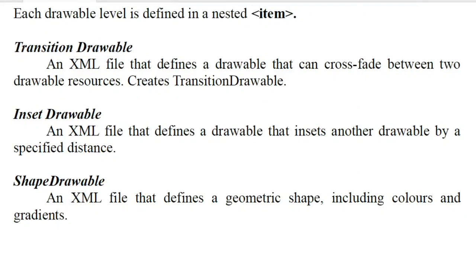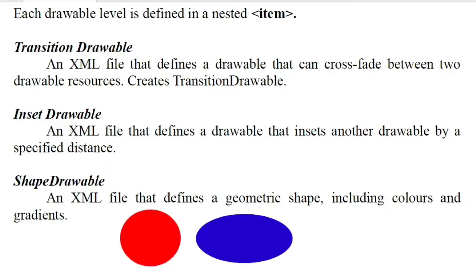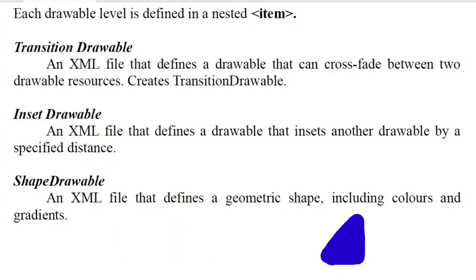Then, InsetDrawable. Different shapes — the shapes include different colors. Once you have a drawable, shape drawable — that is, we have a geometric shape. For example, circle, oval shape, triangle. We have colors to specify and include. Then we have drawable resources in Android. I will go to the coding session from an exam point of view.